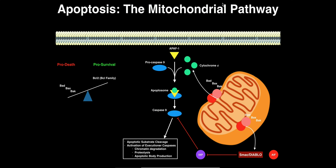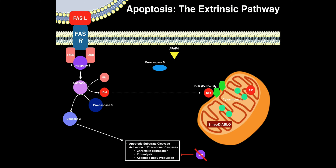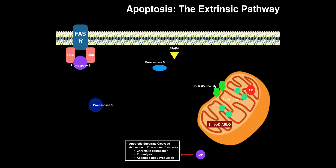In this video, we're going to discuss the extrinsic pathway of apoptosis. This pathway requires an external stimulus, normally from an immune cell. In the extrinsic pathway, all cells have a receptor expressed in their membrane at any given time — it's constitutively expressed, and it's called the FAS receptor.